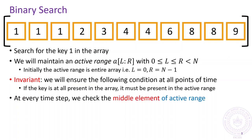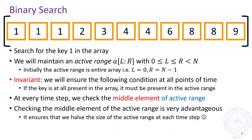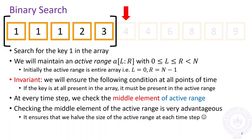At every time step, we will check if the middle element of the active region is equal to the key or not. This is very advantageous since even if this check fails to find the key, it still halves the size of the active range. Initially, the active range is the entire array. We check the middle element and see if it is equal to the key 1 or not. The middle element is not equal to the key and is actually larger than the key. Since the array is sorted in increasing order, this means that none of the elements to the right could ever be equal to the key either. We can safely discard those elements and shrink the active range. We again check the middle element of this new active range and this time we get lucky and are able to find the element right away.